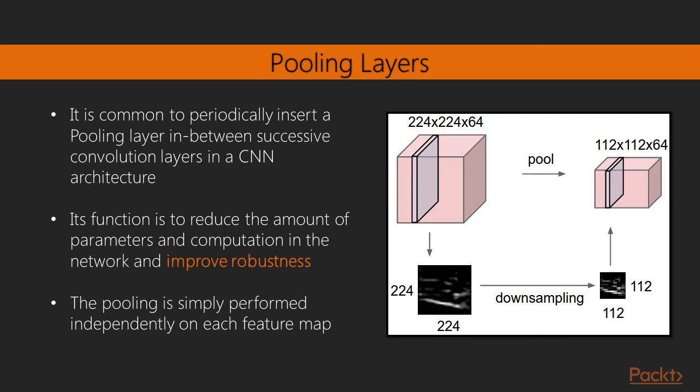In convolutional neural networks architecture it is common to periodically insert a pooling layer in between subsequent convolutional layers. Its function is to reduce the amount of parameters and computation in the network and improve robustness, retaining only the most useful information. The pooling is simply performed independently on each feature map.